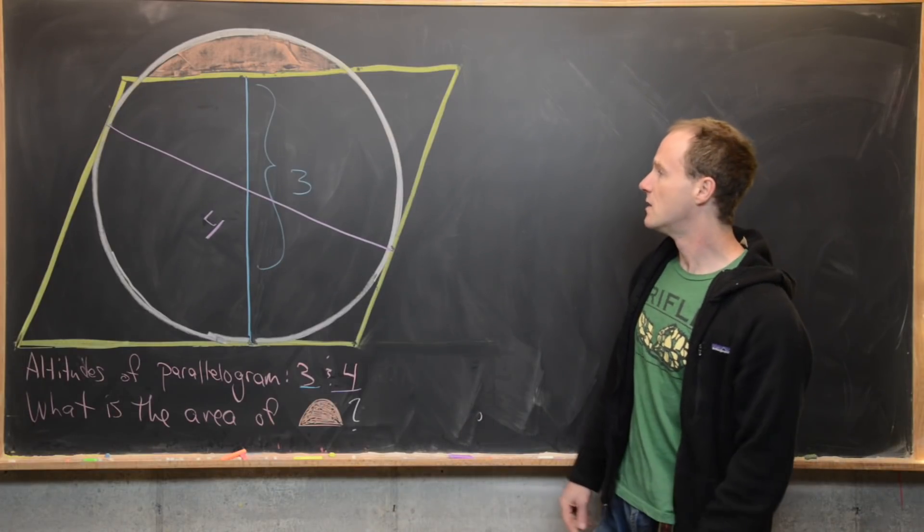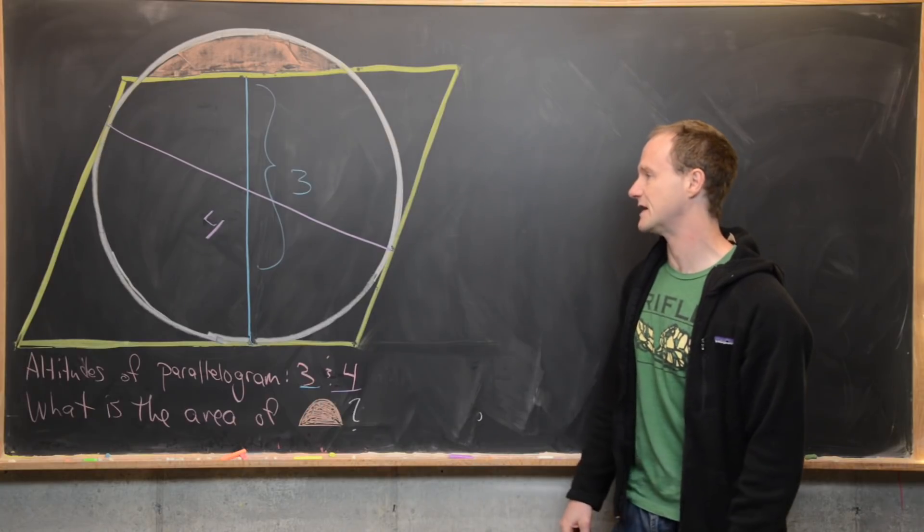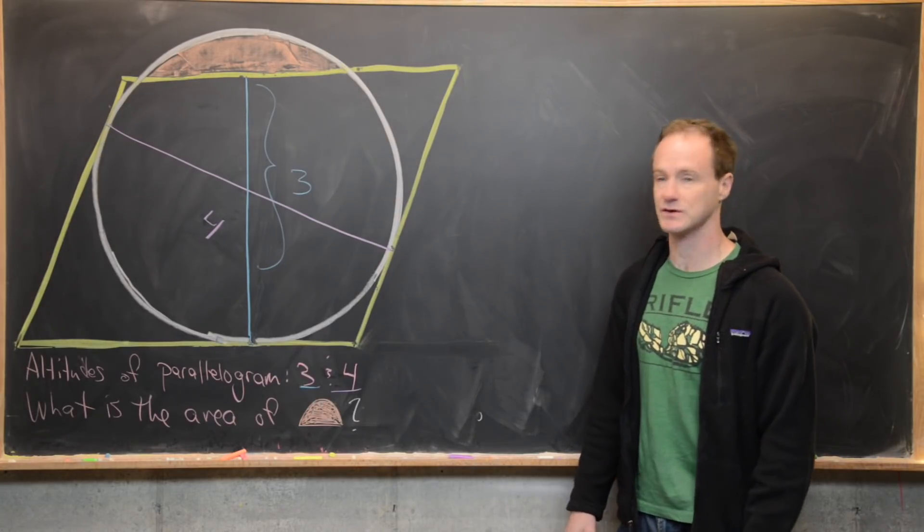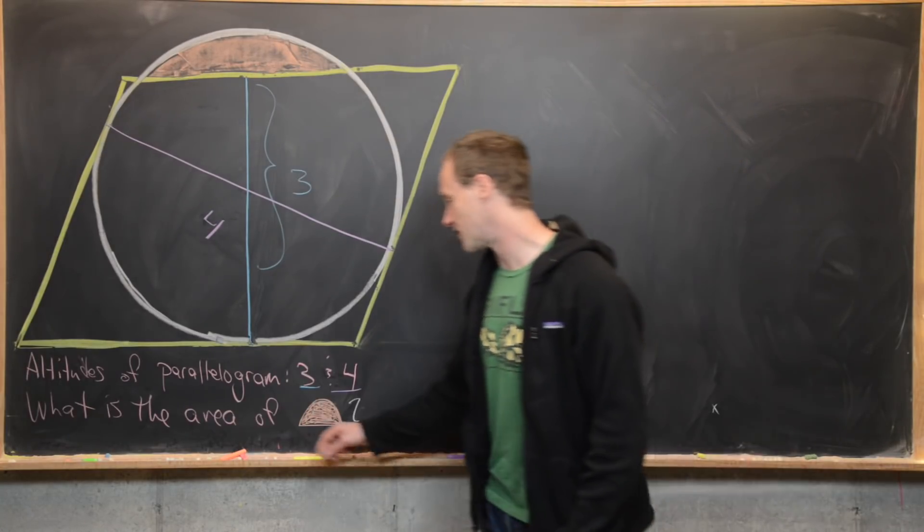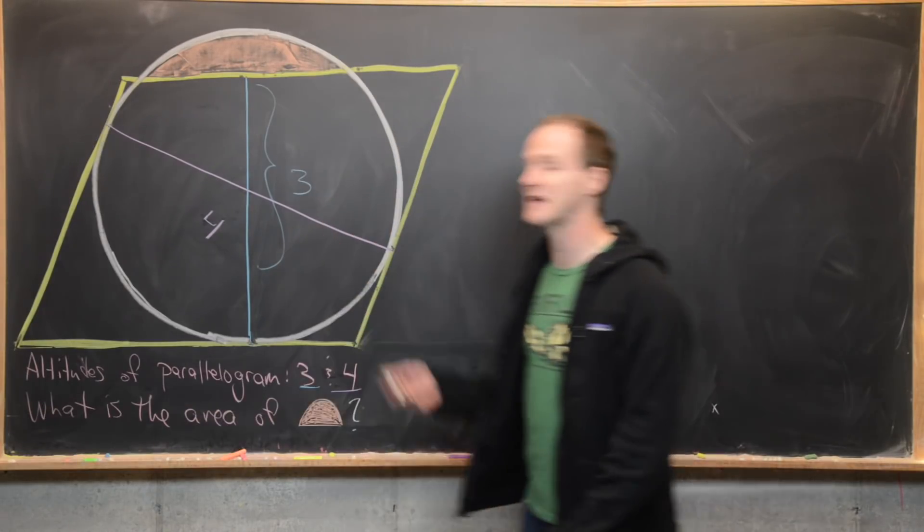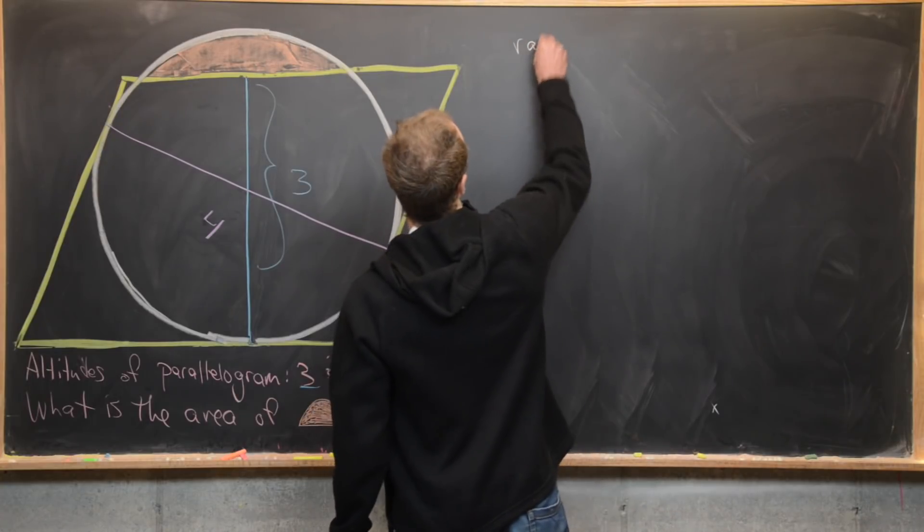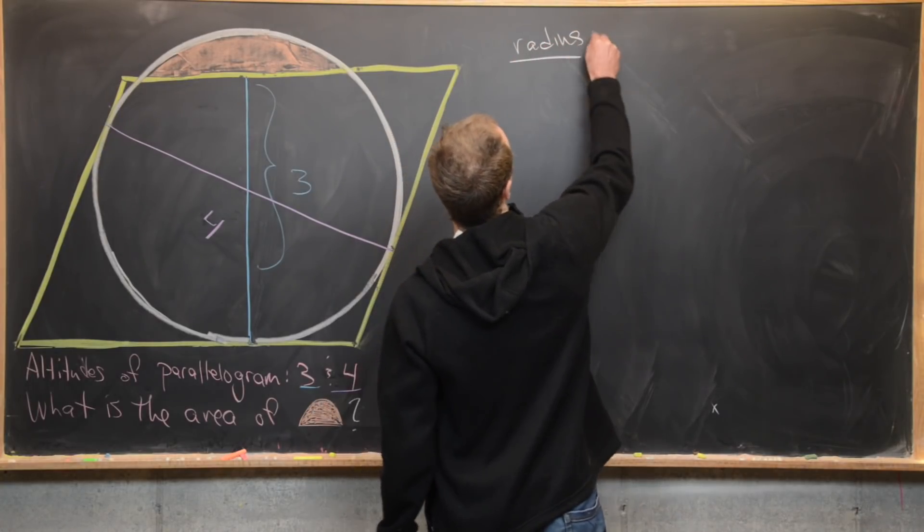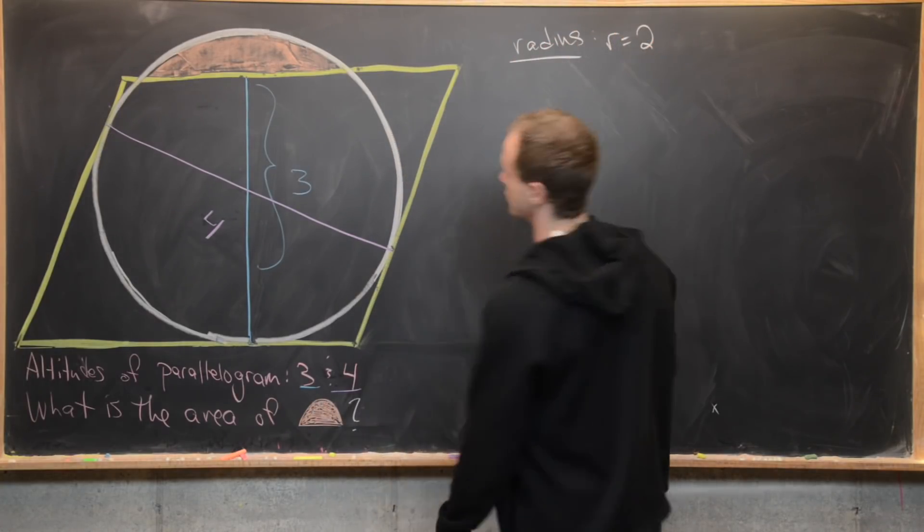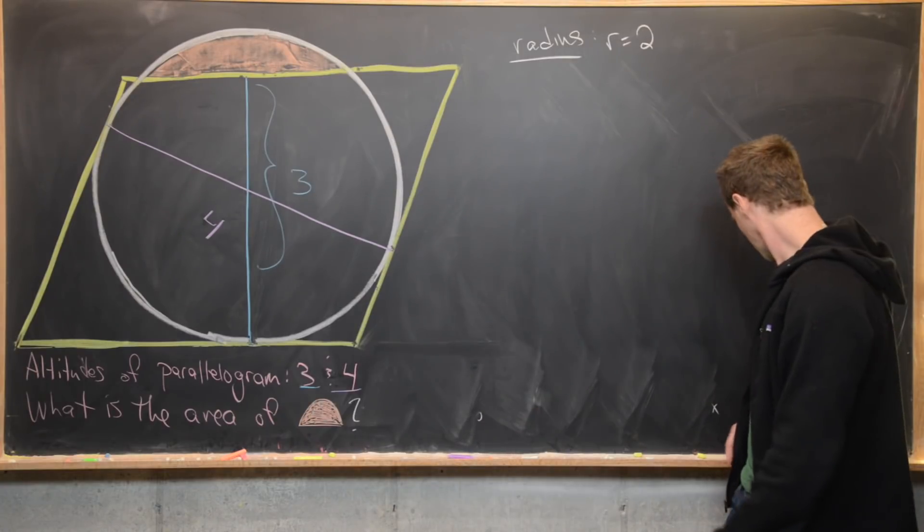Okay, but notice that this purple line segment is also a diameter of the circle. So that tells us that the radius of the circle—well, it's half the diameter—so in other words the radius of this circle, maybe we'll call it r, that is equal to two. So that's actually some really good information.